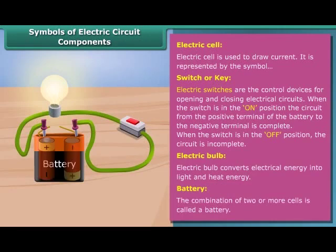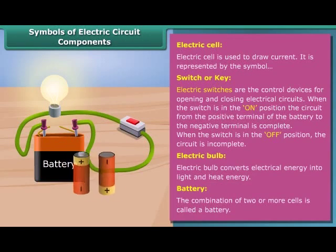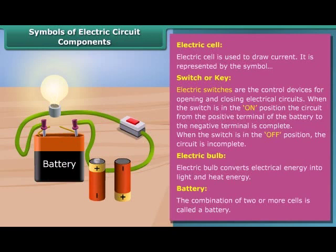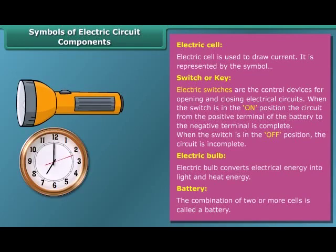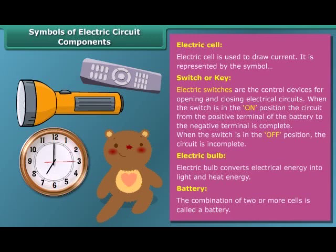The combination of two or more cells is called a battery. In a battery, the positive terminal of one cell is connected to the negative terminal of the next cell. Many devices such as torches, wall clocks, watches, toys, and TV remote controls are battery-operated devices.